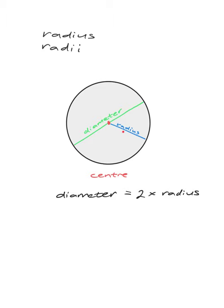I've drawn in one radius here. But all a radius is, is anything from the center of the circle to the edge of the circle. So there are many different radii that we can draw — there's another one, and another one, and another one. Those are all radii of the circle, and they are obviously all exactly the same length.